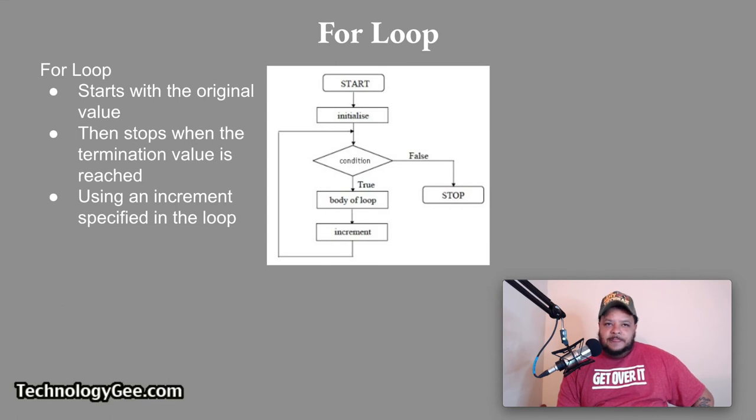A for loop. In a for loop, the loop starts with the original value and then stops when the termination value is reached using an increment specified in the loop. So pretty much it starts and it might have a condition saying if you reach the value of 20, then the condition will be false and the loop will terminate itself. But until it reaches the value of 20, it'll just keep looping itself over and over until it reaches the number 20 or whatever you determine to be the termination value.